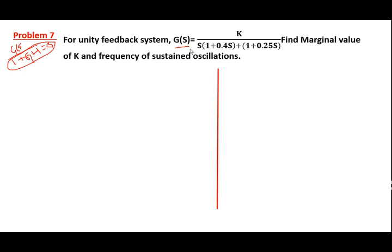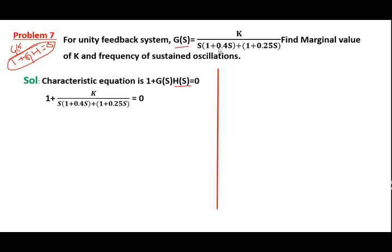Later we can proceed with the Routh-Hurwitz criteria. The characteristic equation is: denominator of closed loop transfer function, which is 1 plus G(S) into H(S) equal to 0. Since this is a unity feedback system, H(S) equals 1. So 1 plus G(S) equals 0, giving us S into (1 plus 0.4S) into (1 plus 0.25S) plus K equal to 0. After multiplication and simplification, the characteristic equation becomes 0.1S³ plus 0.65S² plus S plus K.